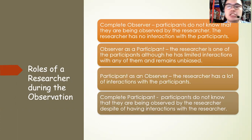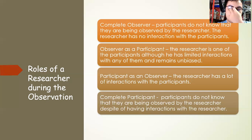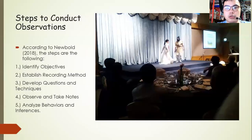When we say observer as a participant, the researcher is one of the participants but has limited interactions with any of them and remains unbiased. When we say participant as an observer, the researcher has a lot of interactions with the participants. In the complete participant role, the researcher essentially acts as a spy — observing fellow participants while having a secret plan to collect data.